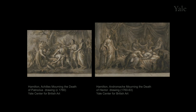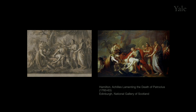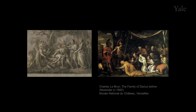Achilles mourns his companion Patroclus, on the left, whom he'd sent out wearing his own armor and who was killed by the Trojan hero Hector. And on the right, Andromache, with the body of Hector, her husband, dead at the hand of Achilles. We have one of these paintings, which makes it obvious that Hamilton didn't just make all this up on his own — he had studied paintings by Nicolas Poussin and his successor Charles Lebrun, such as this one in Versailles by Lebrun, which has tall willowy figures organized into a shallow frieze in front of a tent, expressing grief with solemn intensity.